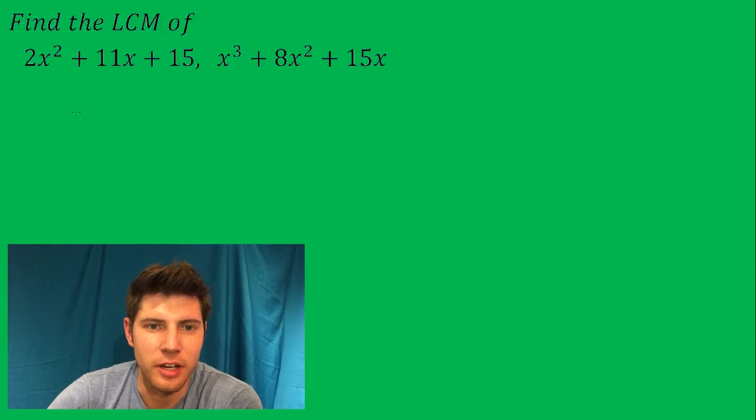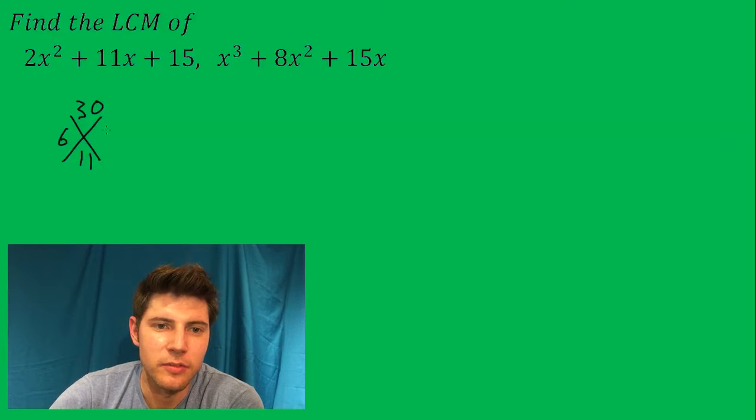So the way we factor this guy out, we need two numbers that multiply to give us 30 and add to give us 11, and that's 6 and 5.